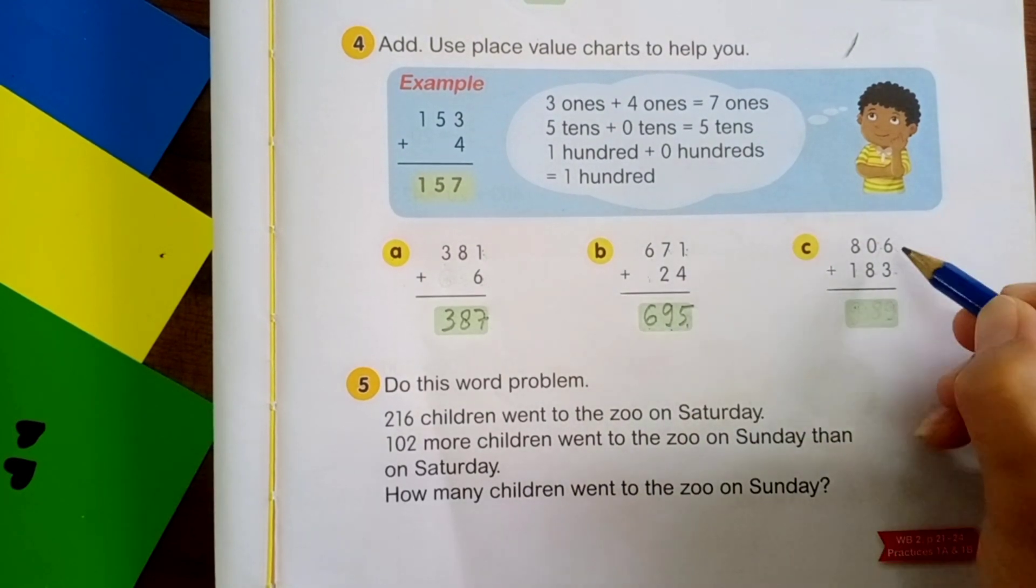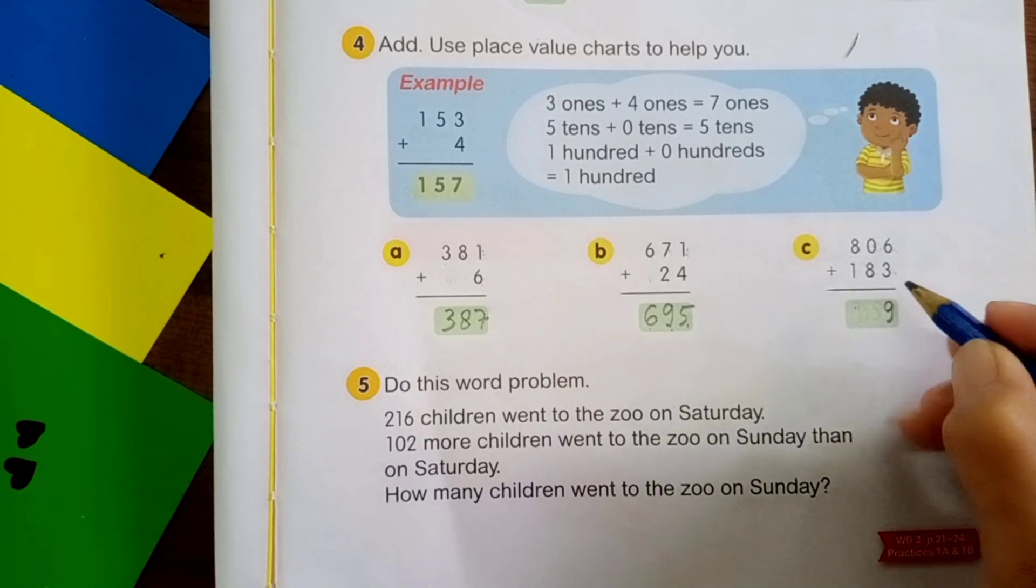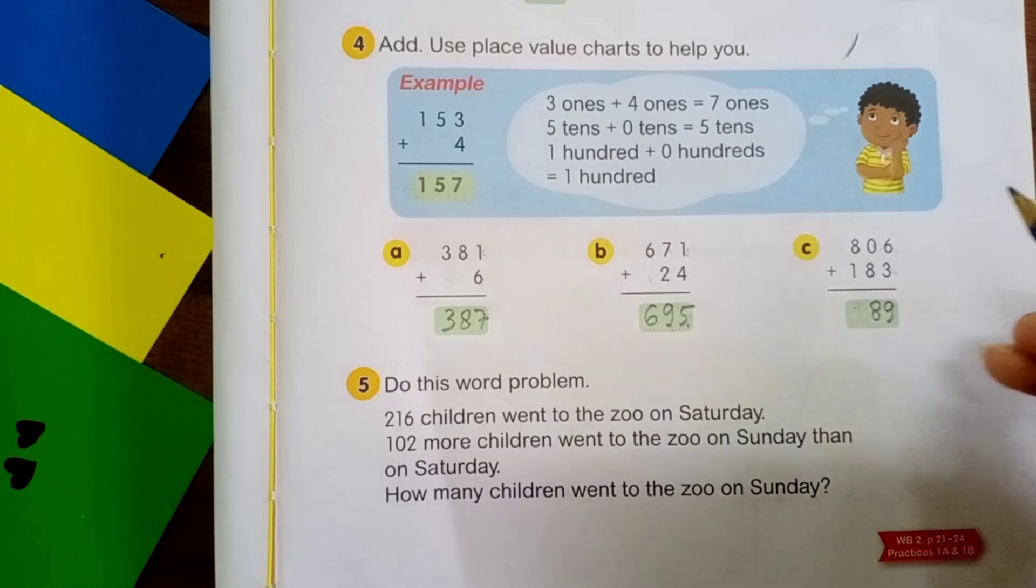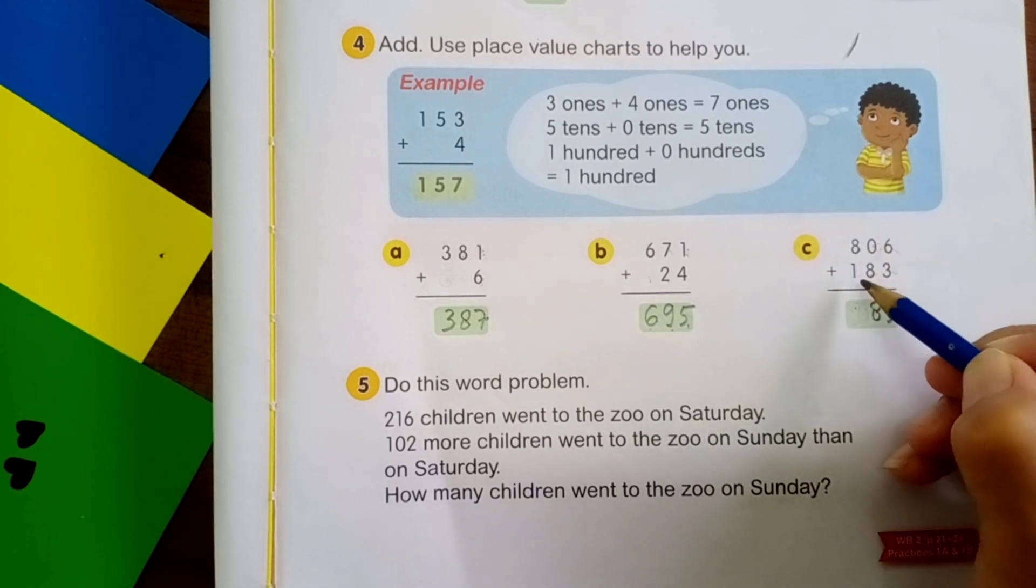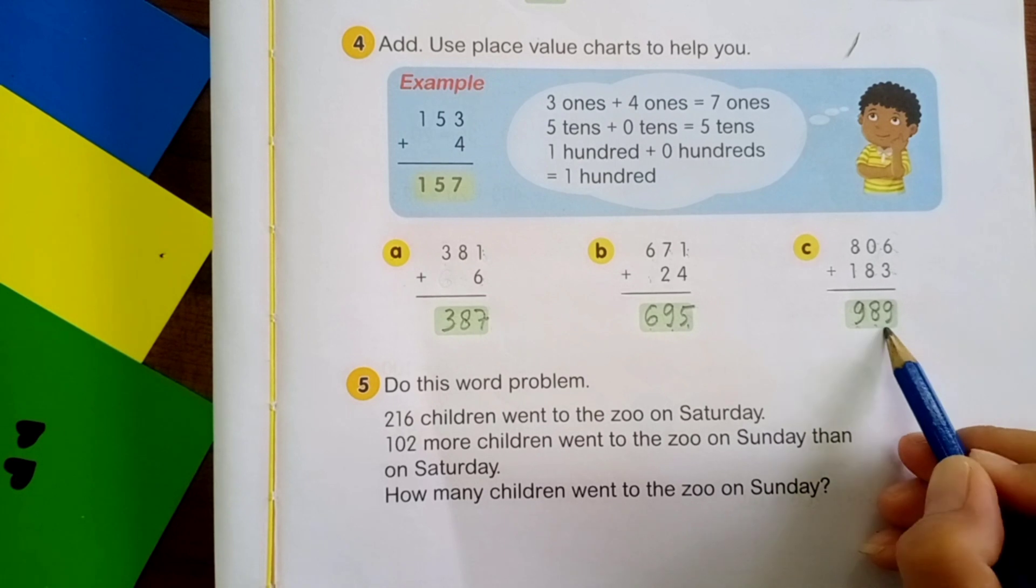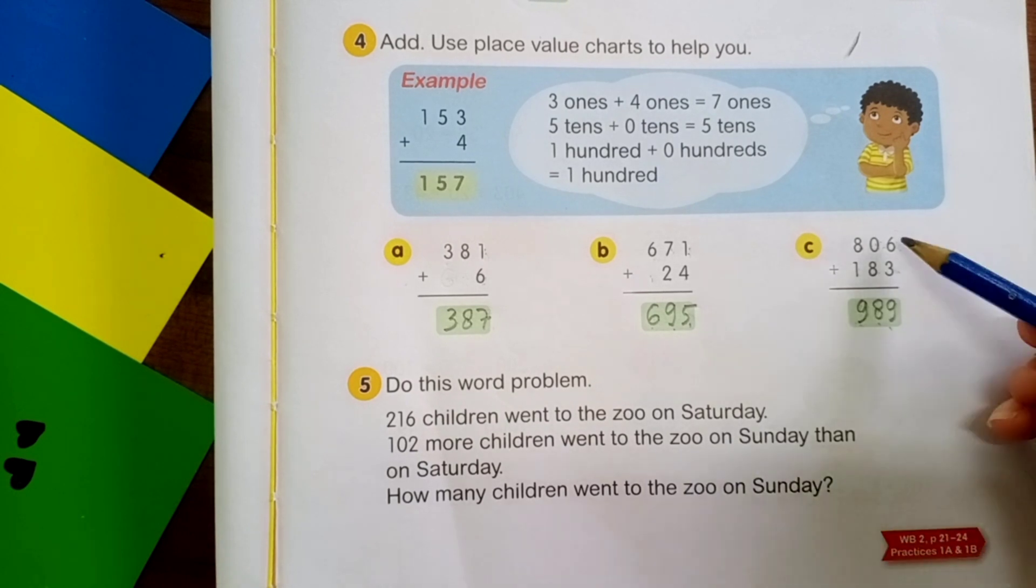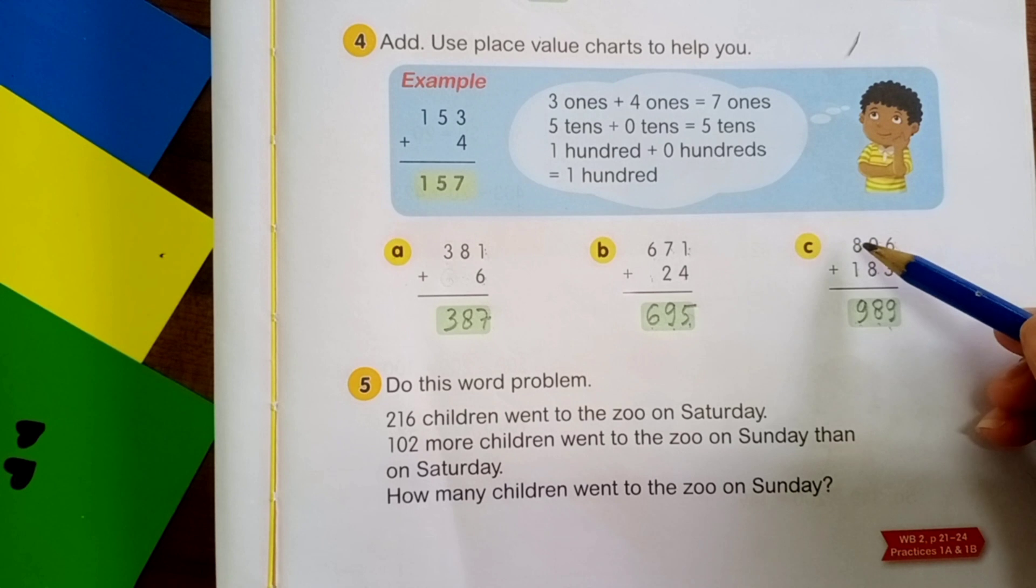This is the last. Start from ones. 6 plus 3 is equal to 9. 0 plus 8 is equal to 8. The last hundreds. 8 plus 1 is equal to 9. The answer is 989. Students, I want to remind you, when you add number, start from ones. You cannot start from hundreds. For example, you add 8 plus 1 first. That is wrong. Start from ones. 6 plus 3, 0 plus 8, 8 plus 1. Like that.